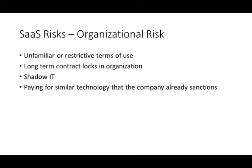There's also organizational risk involved in going with a SaaS provider. You may be restricted by their terms of use — for example, what if they claim ownership of your data? What about long-term contracts that lock you in? Shadow IT is another organizational risk, where other departments bring in cloud providers because IT can't meet their needs, resulting in paying for duplicate services that the company already sanctions.